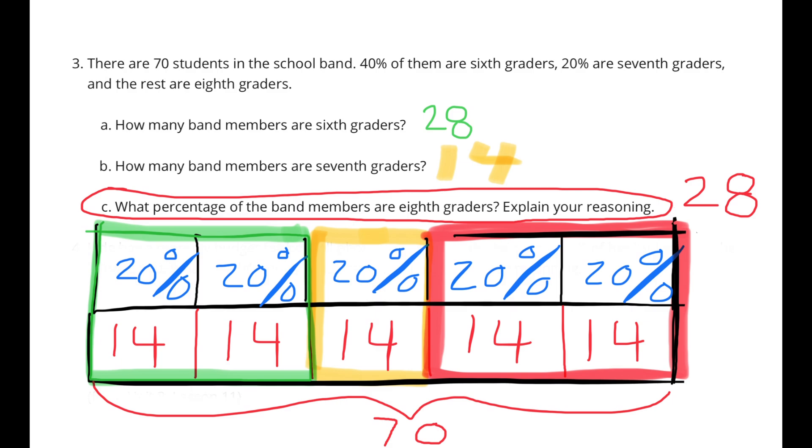What percentage of the band members are in the 8th grade? The remaining band members are in the 8th grade. 20% plus 20% or 40%, just like the 6th graders. 14 plus 14 equals 28. So 28 of the band members are in 8th grade.